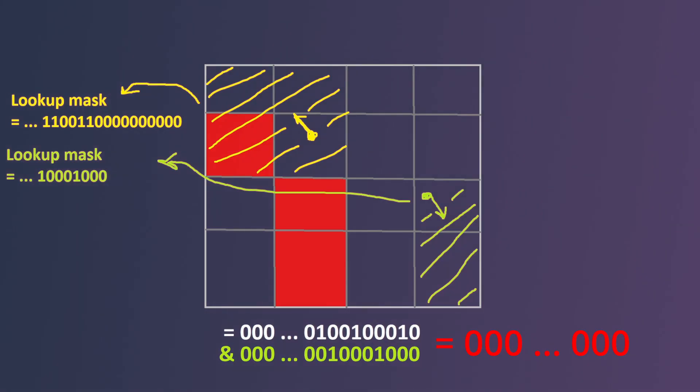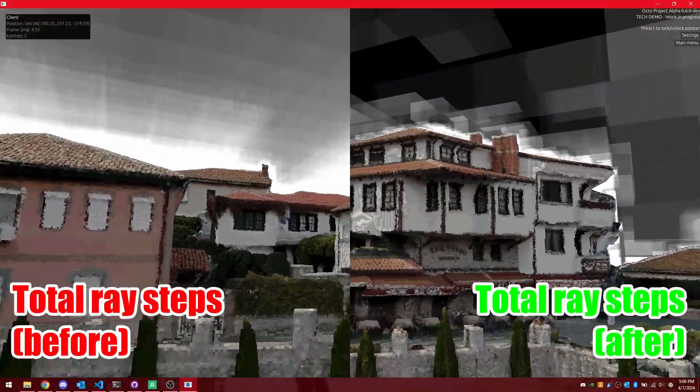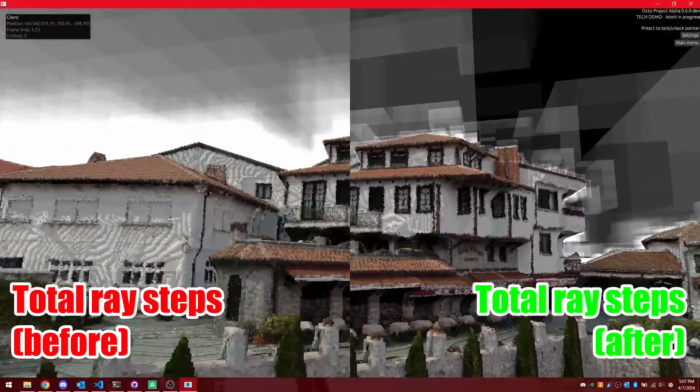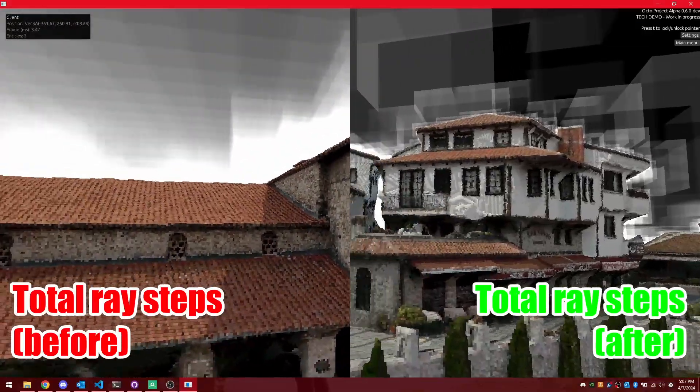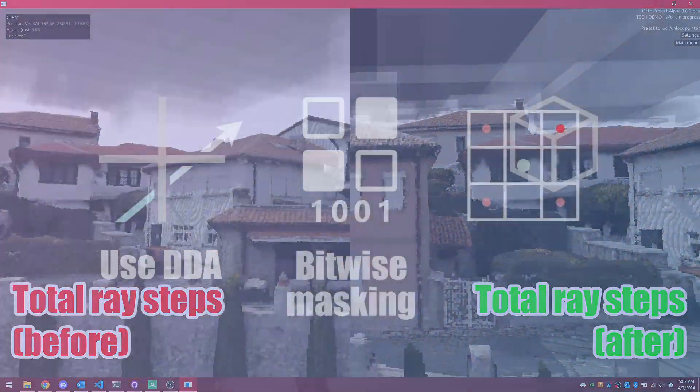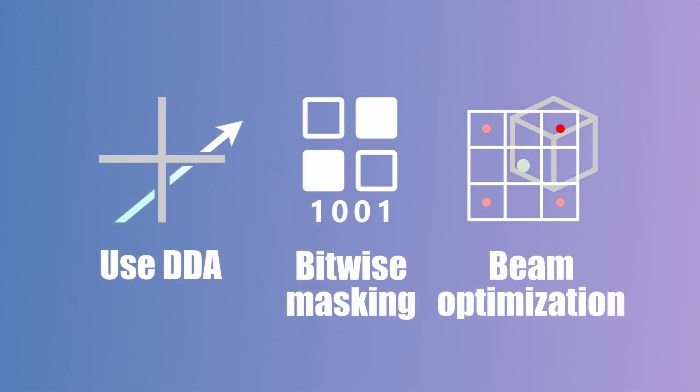After adding this to my ray marcher, the frame times on my integrated GPU dropped another 20 milliseconds, bringing me down to 80 milliseconds per frame, much closer to real time. But I wasn't finished. I had yet to implement the third optimization, the beam optimization.